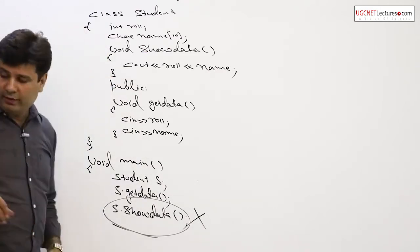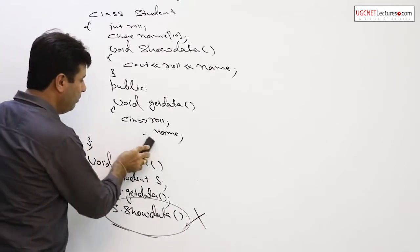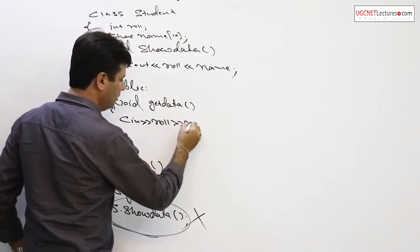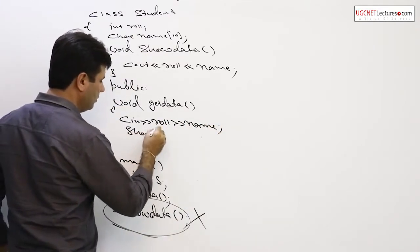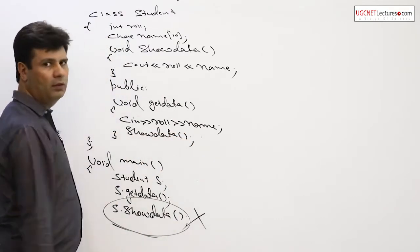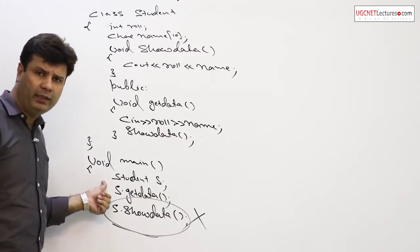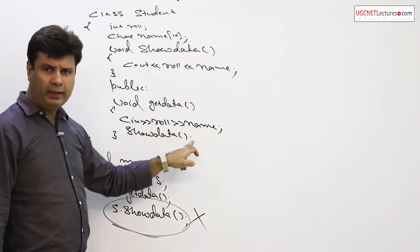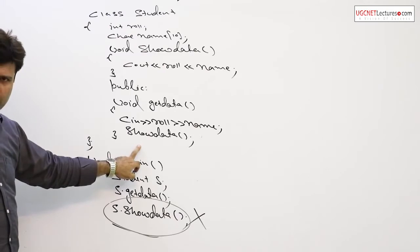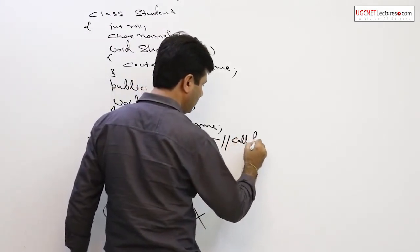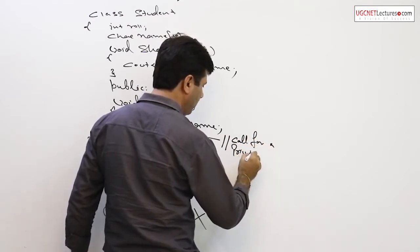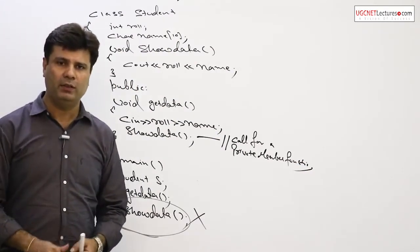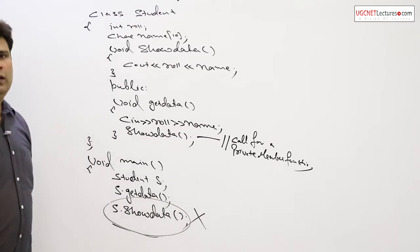The reason is that show data is not publicly defined — it is defined privately within the class. Always remember: private member functions of a class can always be called from a public member function of the same class. The program starts from main, the object is declared, get data is called, roll number and name are input by the user, and from get data there is another call to show data — that is how you invoke a private member function.